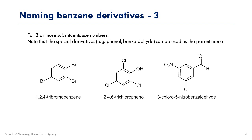Finally, our third example also has a high priority group — the aldehyde — so we start on that carbon as number 1. Here we have a choice of directions, but we go to the higher of these two fairly low priority groups. We'll go to the chloro first, so that is 3-chloro-5-nitrobenzaldehyde. If the nitro had been closer, say on a nearer substituent, then we would go first to that because it is the closest, which would minimise the number of the closest group.